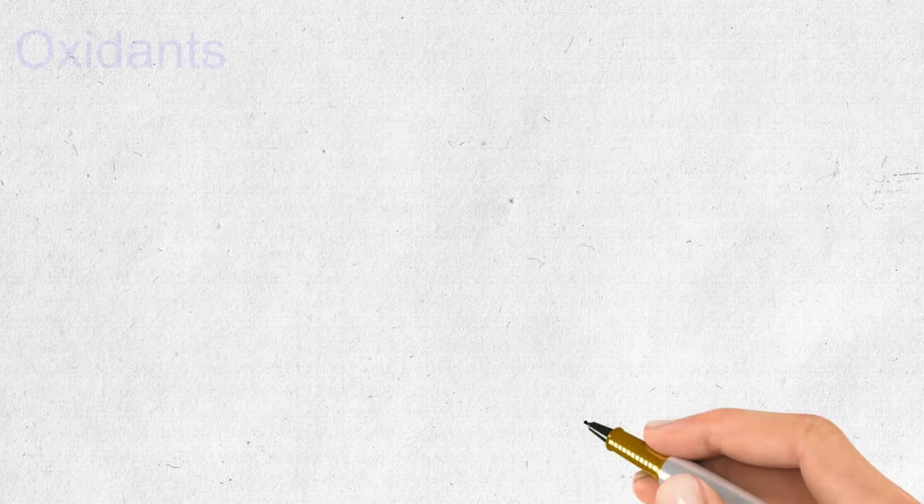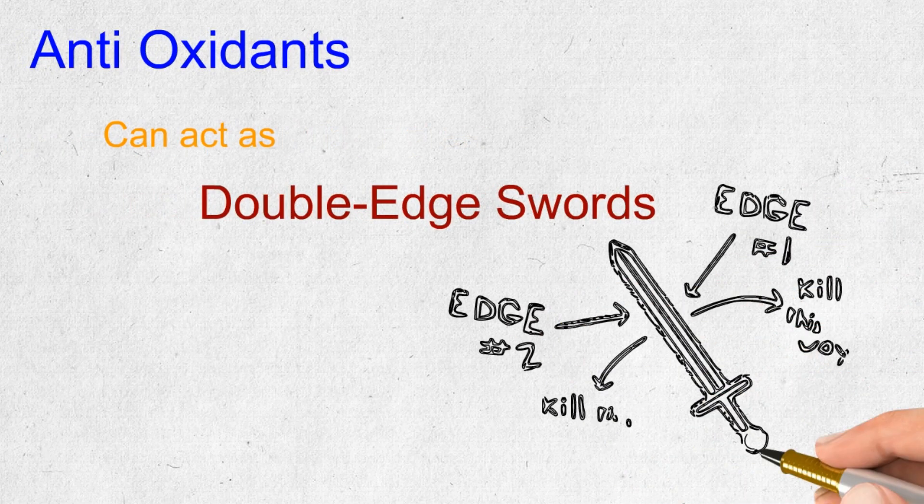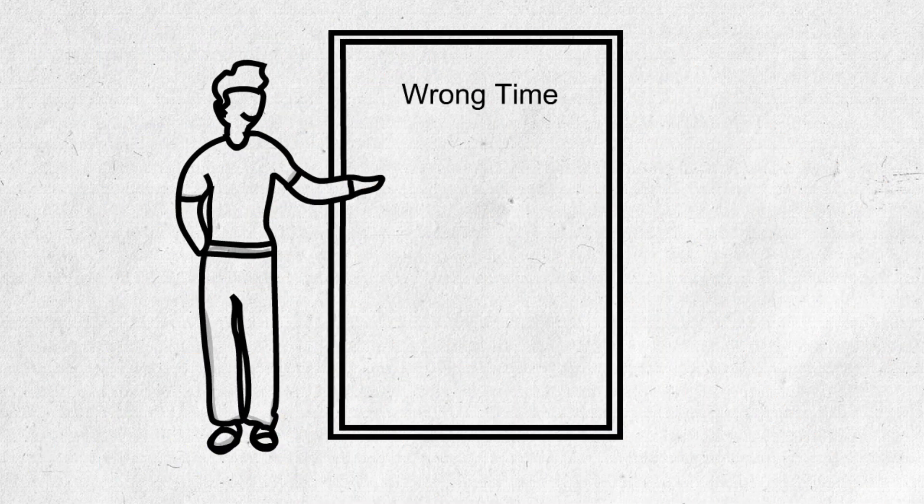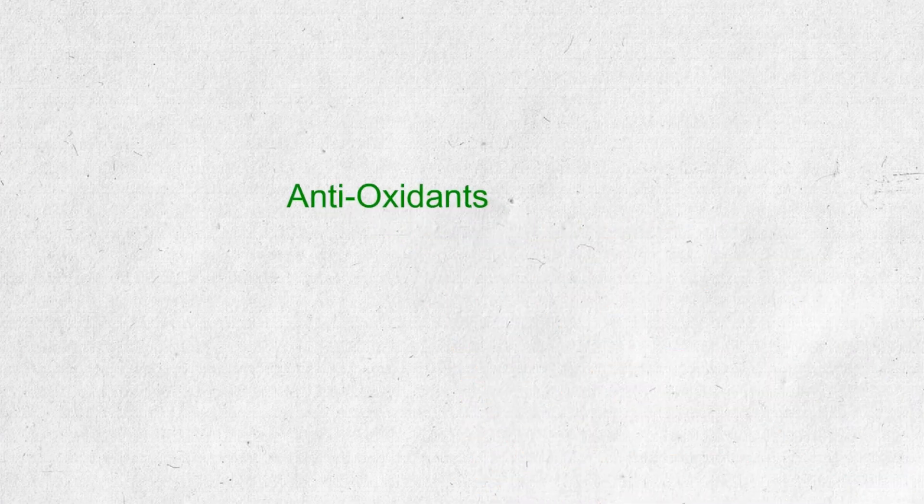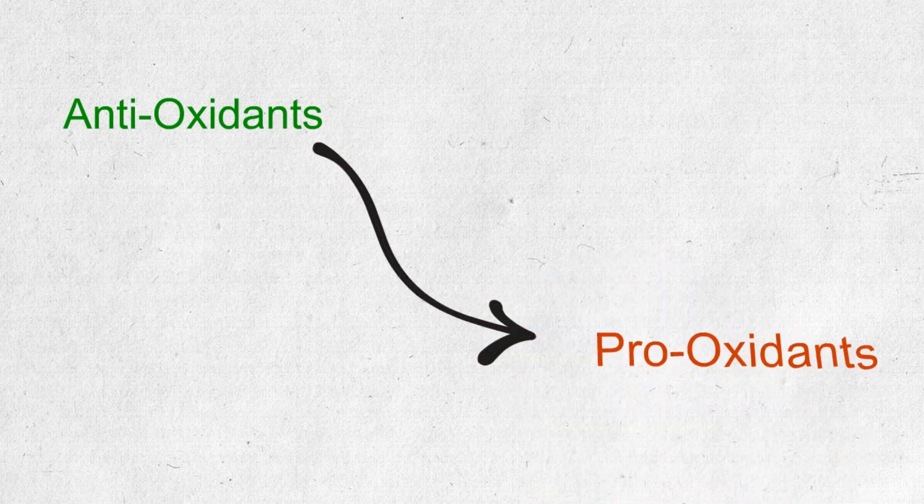Today studies have found out that antioxidants can act as double-edged swords, meaning that if they are present at the wrong time, wrong place or wrong dosage, they can actually be harmful. Or in better words, antioxidants easily become pro-oxidants.